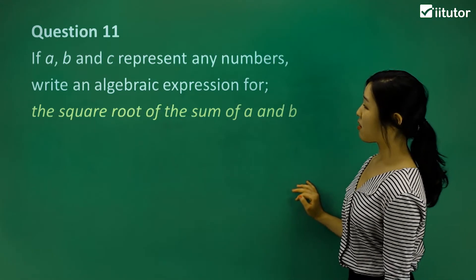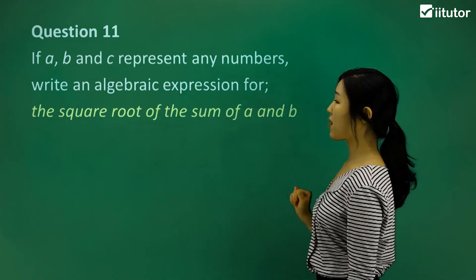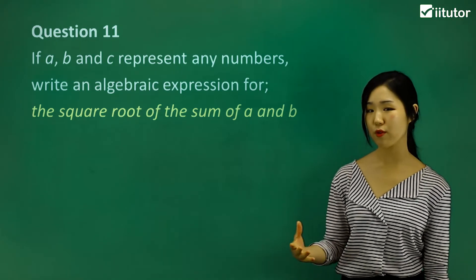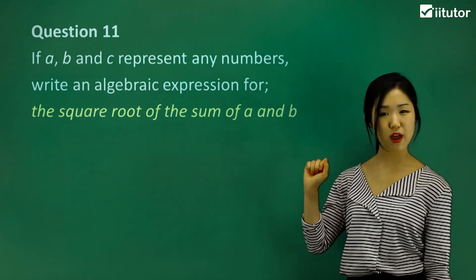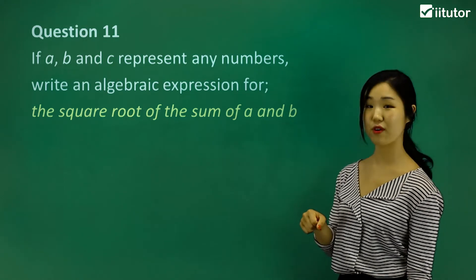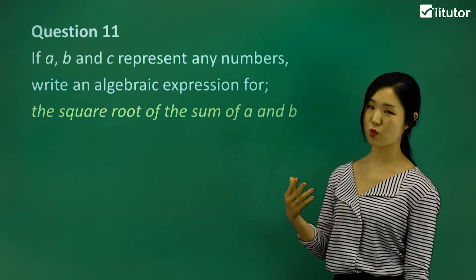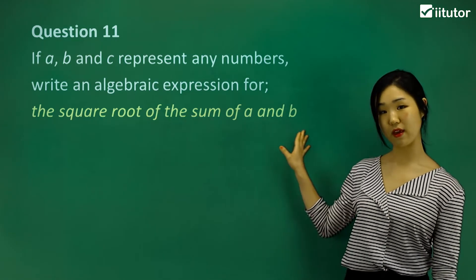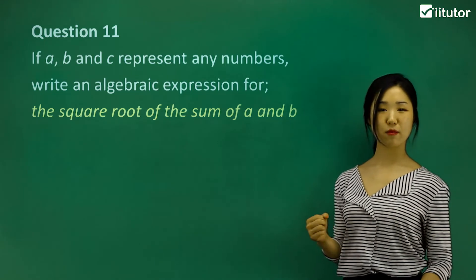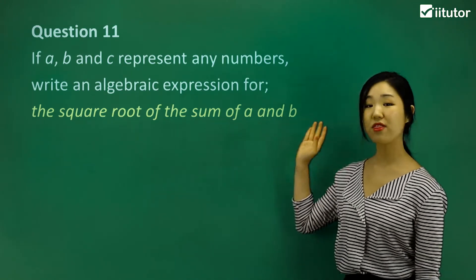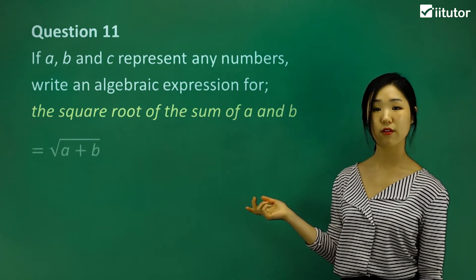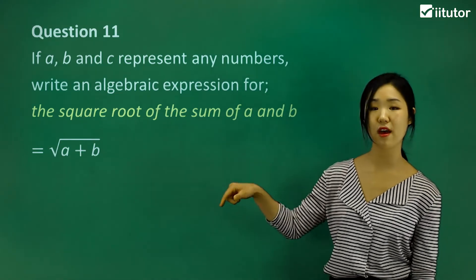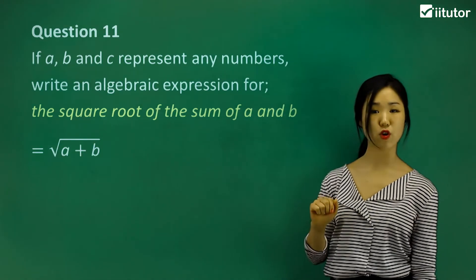Question eleven: if a, b, and c represent any numbers, write an algebraic expression for the square root of the sum of a and b. We're going to square root — remember that root symbol we looked at before? That means square root, the opposite of squaring. We're going to square root the sum of a and b, so we're square rooting a bigger expression. The sum of a and b — that's the whole thing we're square rooting — so it's simply the square root with a plus b going inside the root entirely.